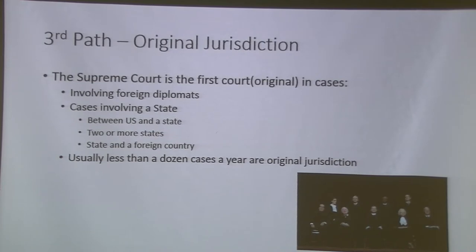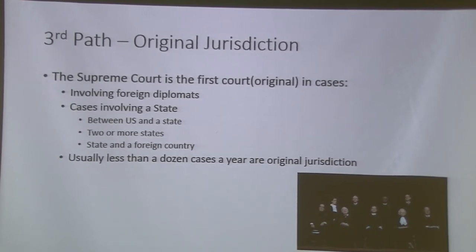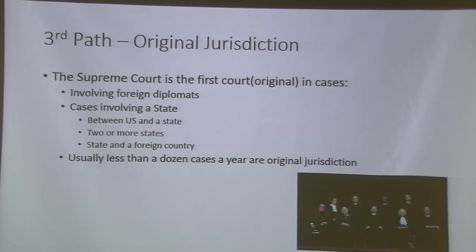A small percentage — roughly 10 or so of the 100 cases — are original jurisdiction. These are cases that involve a state, usually a state and a foreign country, two or more states, or between the federal government and a state. There are usually not a large number of these, but a key point is that the Supreme Court is both an appeals court and an original jurisdiction court, whereas district courts are original and circuit courts of appeals are appellate.